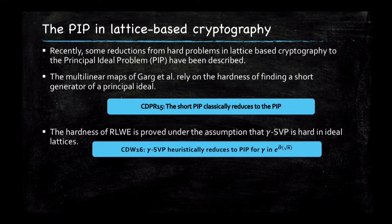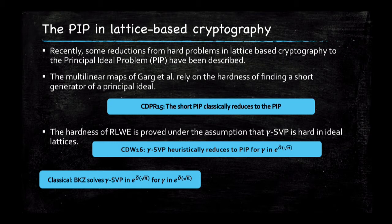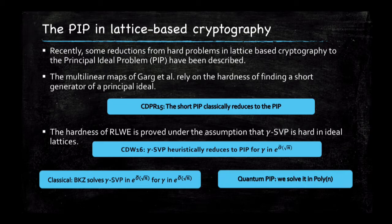A problem for which we're providing a polynomial-time quantum solution. Why is this interesting? Because here again we have an example of a quantum algorithm that outperforms the best known classical algorithm by a super-polynomial improvement factor. The BKZ algorithm would solve gamma-SVP for the same gamma in time that is exponential in square root of n. Under that heuristic reduction, we present an algorithm that would solve the same problem in polynomial time.